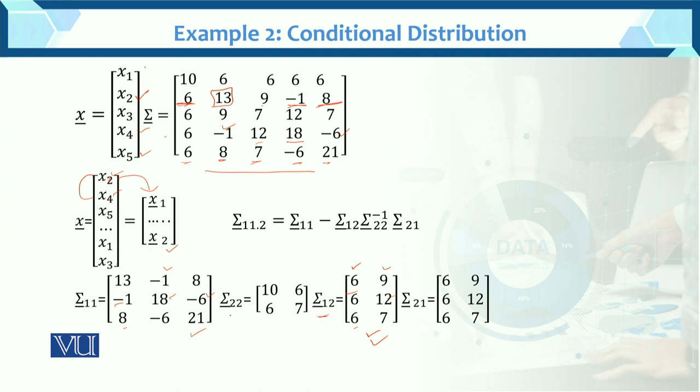Then Σ2,2. 2,2 means x1, x1. First row, first value. 10. x1, x3. First, third value. Then x3, x1. Third row, first value. x3, x3. Third row, third value. This is the total scenario.